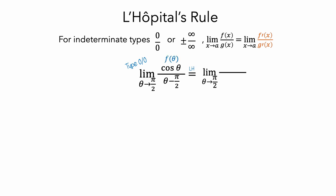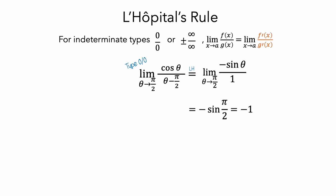So, if f is cosine of theta and g is theta minus pi over 2, then we'll take the derivative of f, which is negative sine of theta, and the derivative of g. Since theta is the variable and pi over 2 is a constant, the derivative of g is just equal to 1. Since negative sine is continuous at theta equals pi over 2, we can evaluate negative sine of theta at theta equals pi over 2, and this will be equal to negative 1. So we've just used L'Hôpital's rule to evaluate this limit.